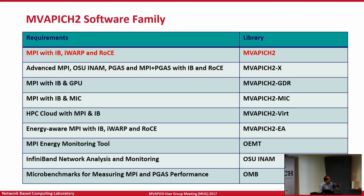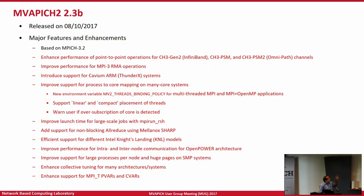These are all the software family versions. Starting with the basic MVAPICH2 — we made a new release just last week: MVAPICH2 2.3b. We have done a lot of optimizations for all the channels — InfiniBand, the traditional PSM, and also PSM2 OmniPath. We improved performance for MPI-3 RMA operations. This is the first time we introduced support for KVM ARM (ThunderX). As the number of cores per node increases, like with KNL, we are introducing some new environment variables to make it much more user friendly. We have introduced linear compact placement of threads, and can warn users if oversubscription of cores is detected.